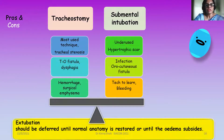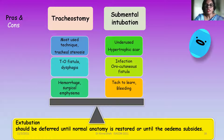Comparing the two options available for airway management in faciomaxillary anesthesia: tracheostomy is most widely used, but complications include tracheal stenosis, perifistula, hemorrhage, and surgical emphysema. Submental intubation is an underused technique but worth learning; its complications include hypertrophic scar, orocutaneous fistula, infection, bleeding, and death. The ventilatory interruption time is much shorter with submental intubation than with tracheostomy, which is why we prefer it.